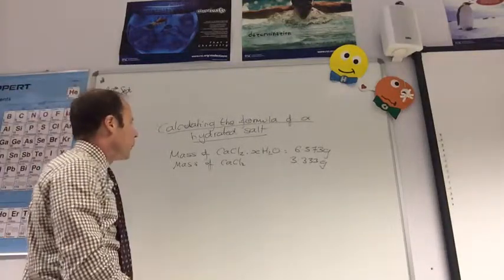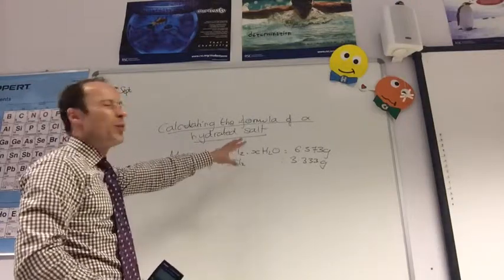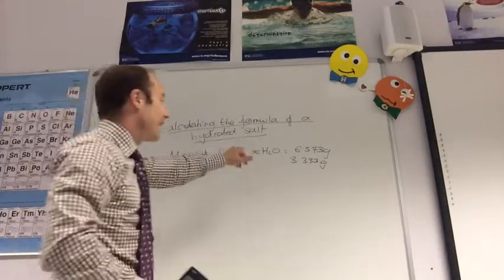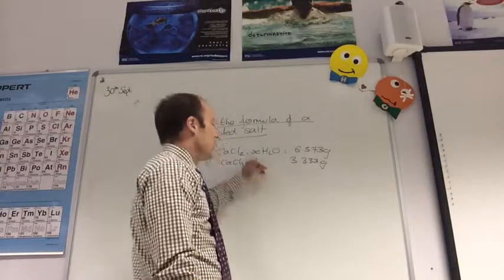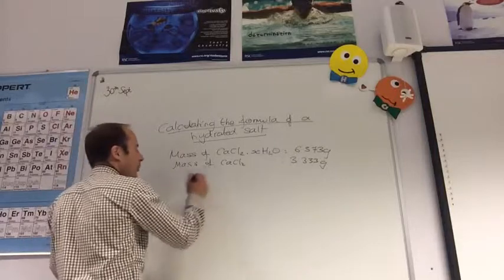We're going to try and calculate the formula of this hydrated salt. It's calcium chloride with some number of waters. X must be a whole number, so we need to work that out. You do it in the same way as the empirical formula.